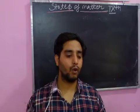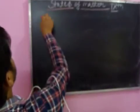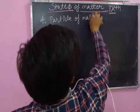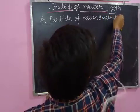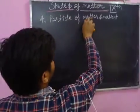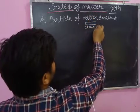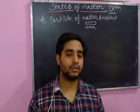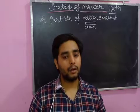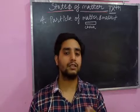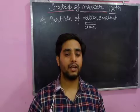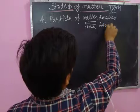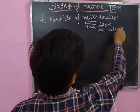The fourth property is that particles of matter are very small. As I mentioned, if we take chalk and keep breaking it, at a certain point we cannot break it further with our hands — but it can still break down to the level of an atom. So the smallest particle of any matter is an atom or molecule.